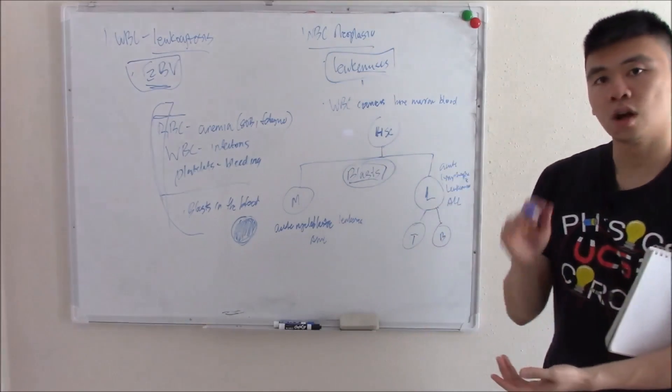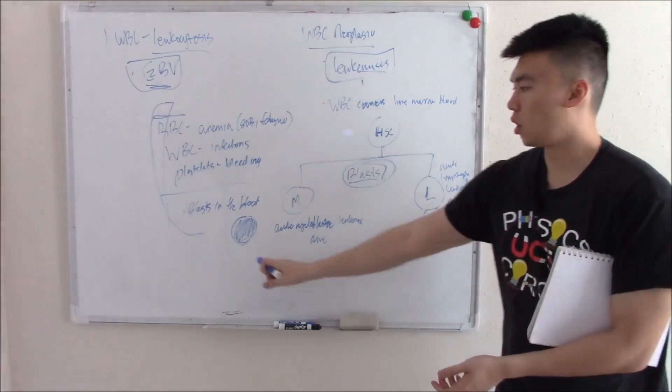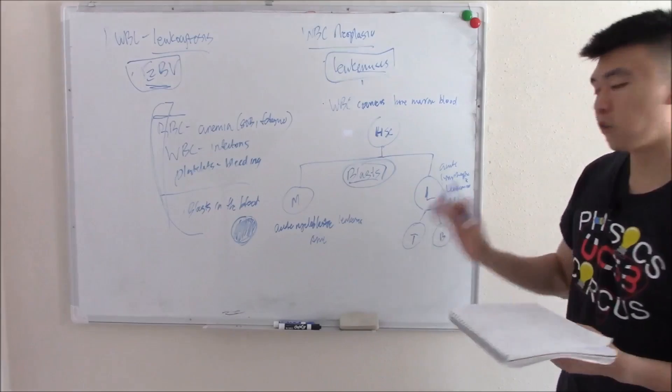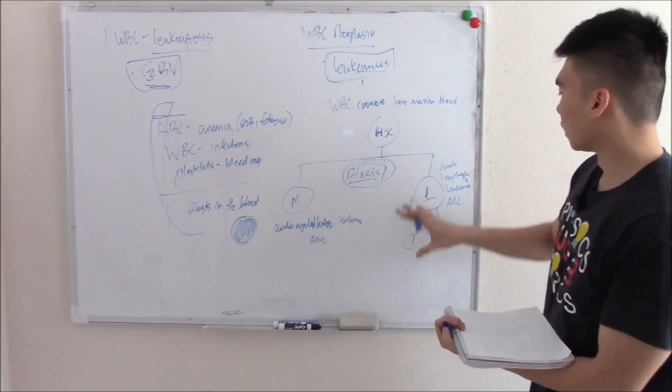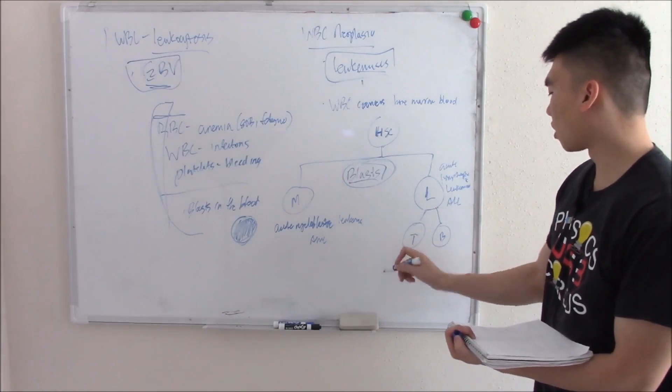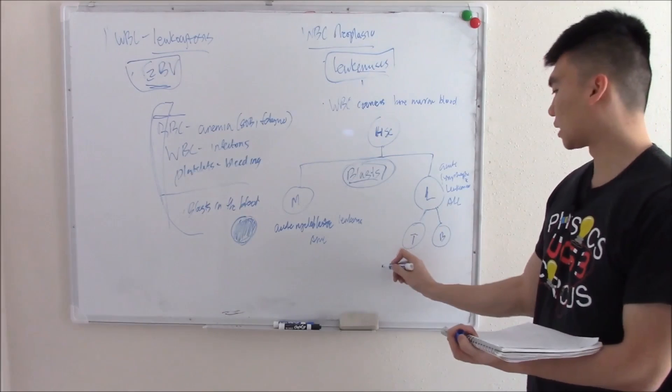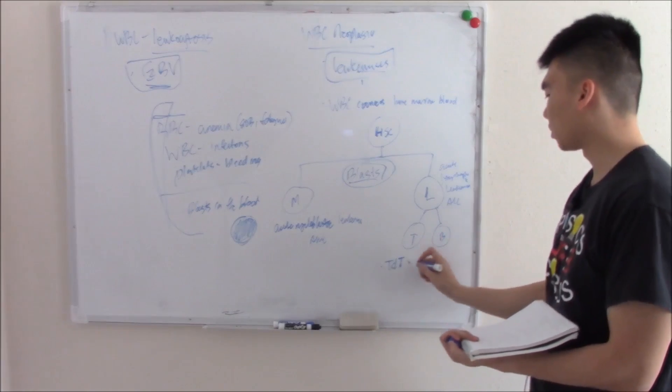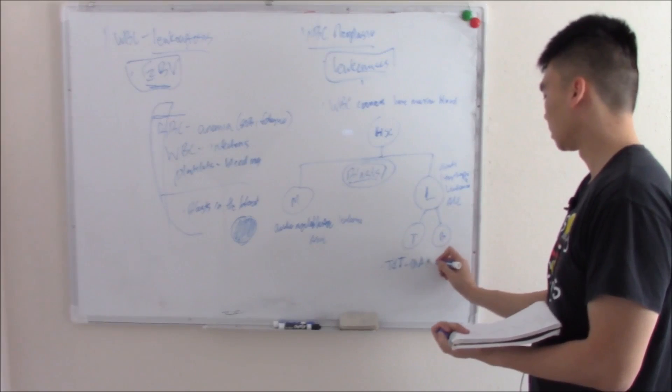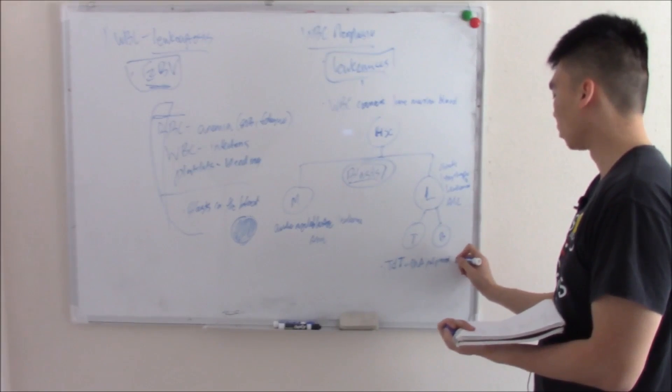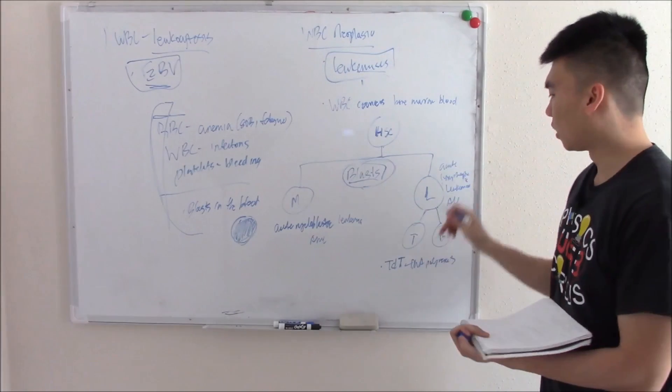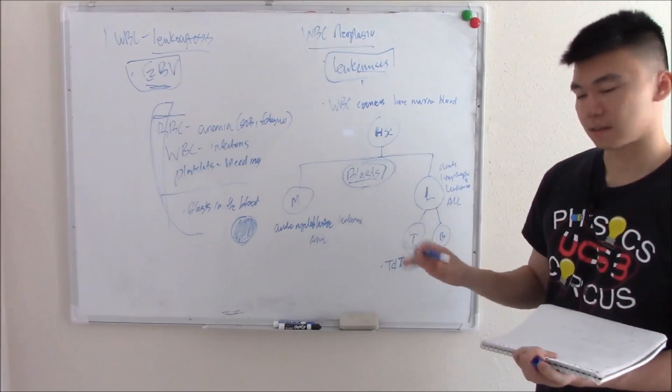They have different treatments, so we have to know where the blast is coming from. For lymphoblasts, it has something called terminal deoxynucleotidotransferase or TDT, a DNA polymerase found only on lymphoblasts. Not on mature lymphocytes, not on myeloblasts, nothing else but lymphoblasts.